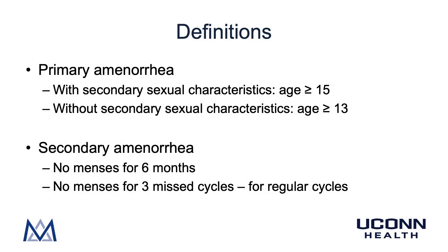Before discussing the differential diagnosis and physical exam, let's first review some of the definitions of primary and secondary amenorrhea. The definition of primary amenorrhea includes both the presence or absence of secondary sexual characteristics as well as the age of the patient. For a patient who has normal development of secondary sexual characteristics such as breast development, pubic and axillary hair development, acne, and other signs of adrenarche and a growth spurt, the age cutoff for absence of menses is 15 years old before diagnosing primary amenorrhea. However, for patients with no development of secondary sexual characteristics, the absence of menses by age 13 should warrant the definition of primary amenorrhea and initiate a workup.